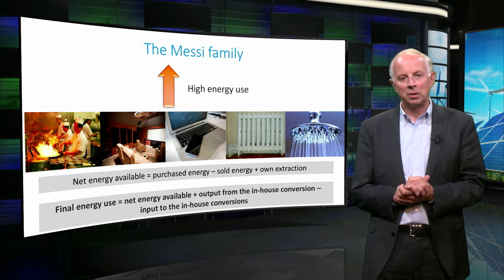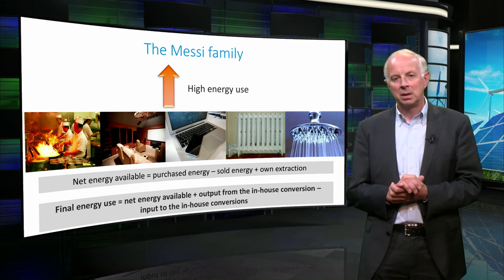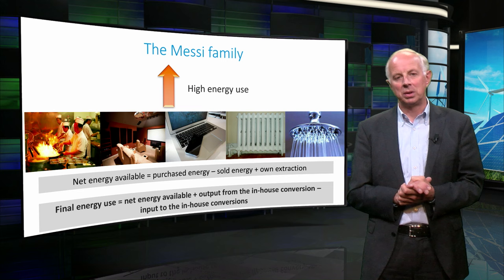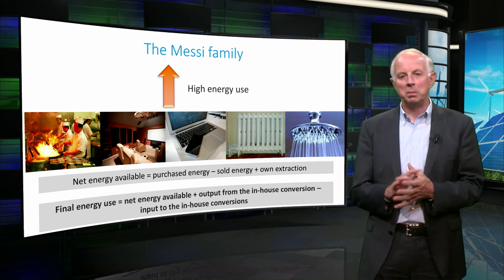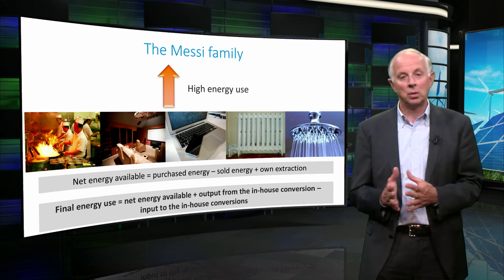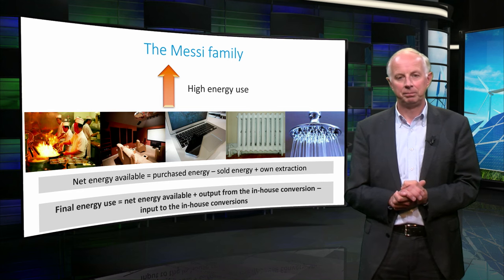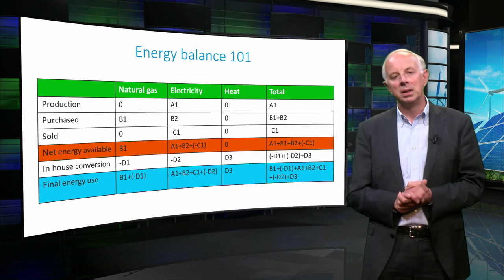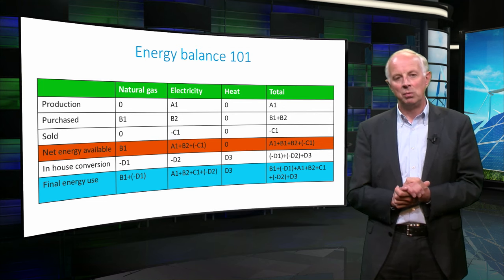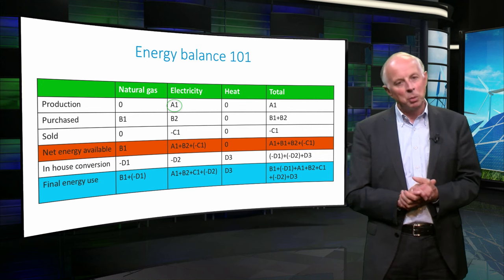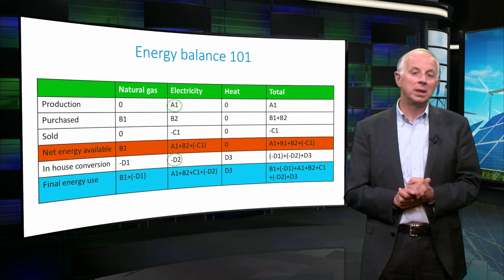The in-house conversions are generation of power and heat in combined heat and power plants. The conversion in the coffee machine, for example, is not included. Note that these flows will always have to be in balance, as energy can neither be destroyed nor created, but only converted into other energy carriers. The table you see here represents a simplified energy balance of the Messi household, without the actual values. The positive factors represent an energy output, while the negative factors indicate energy inputs.